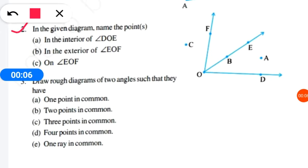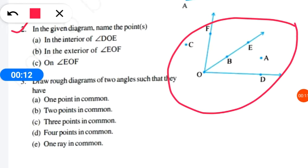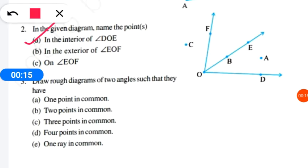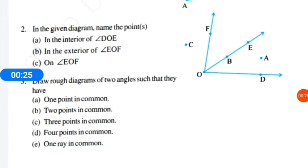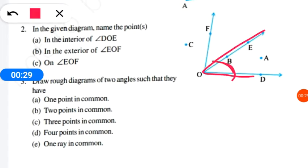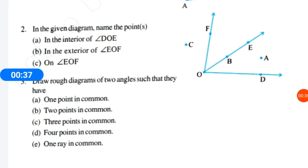In the given diagram, we need to name the points. The diagram is given and we have to write the names of the points. So the first question is: which point is in the interior of angle DOE? Angle DOE — this is the angle we are talking about, the difference between two rays at point O.